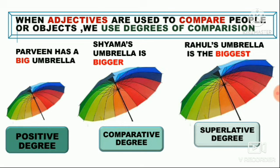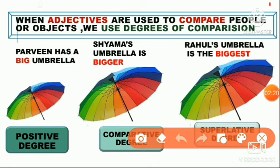The first thing is when we are saying about one particular thing — just ek amrela ki baad bol rahe hai. This is a big amrela — that means positive degree. Degrees are of three types. The first degree is positive degree, when you are not talking about two things. But when a second amrela comes — Shama's amrela is bigger than Parveen's amrela — this is comparative degree, comparing two things.